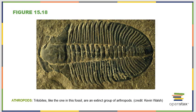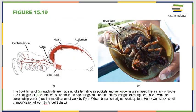Arthropods like the ones seen in trilobite fossils used to rule the world. They existed during the Cambrian period and underwent the Cambrian Explosion — an incredible increase in diversity. While we don't have trilobites on our planet now, we do have many animals that look similar and share the same basic characteristics. Arthropods either have book lungs, gills, or that tracheal system. You can see the typical body plan in a horseshoe crab and an arachnid, both having different ways to exchange gases.